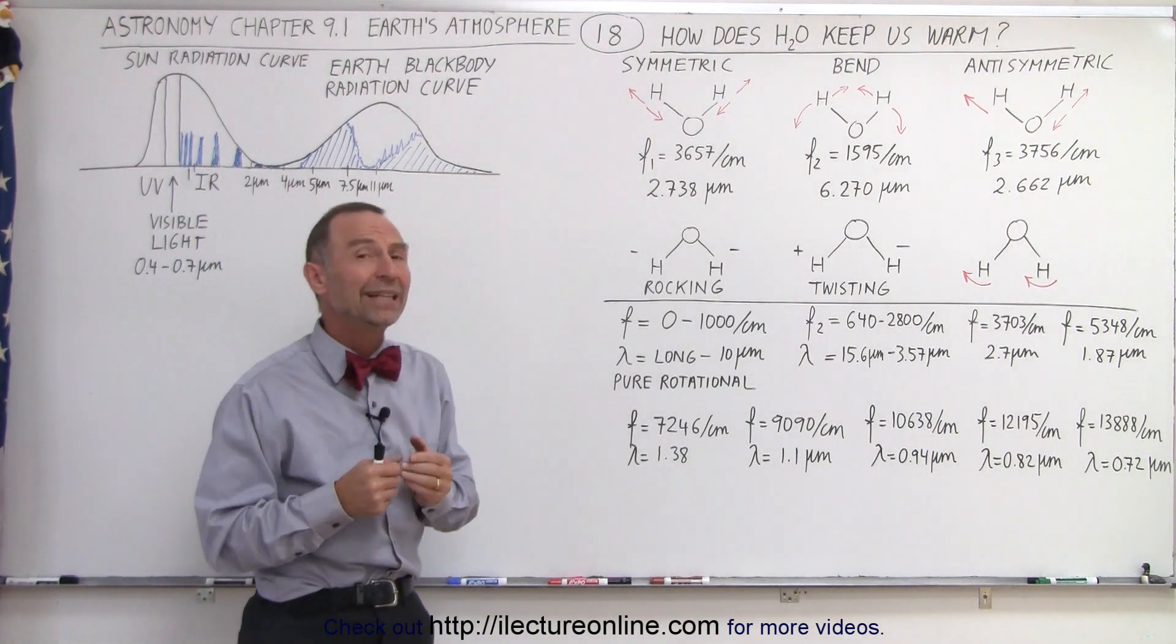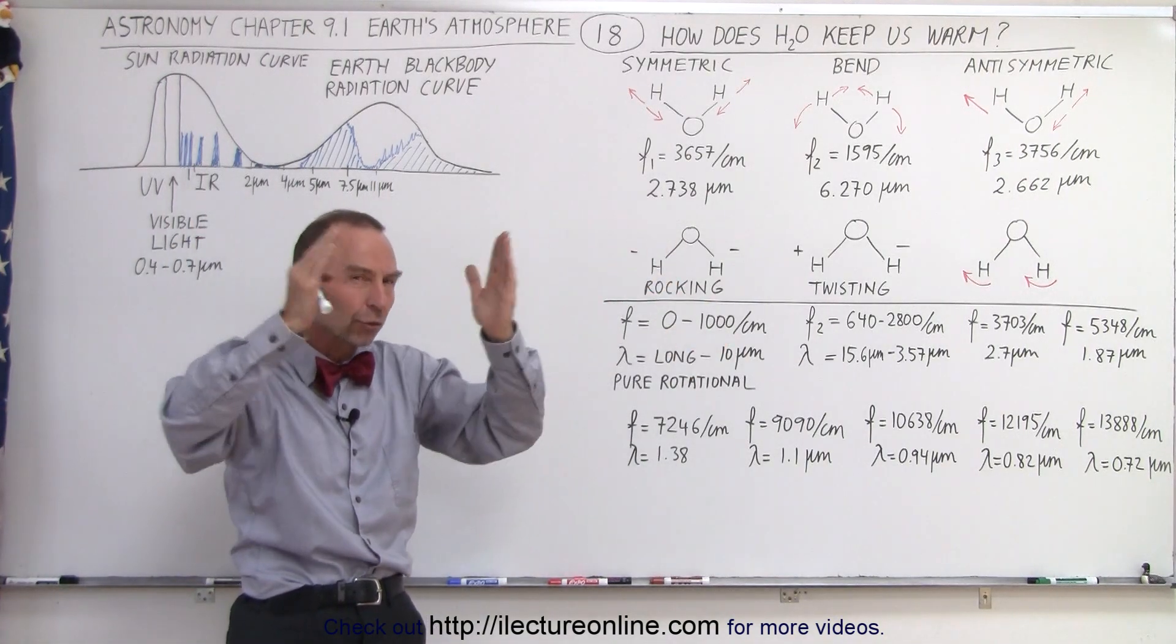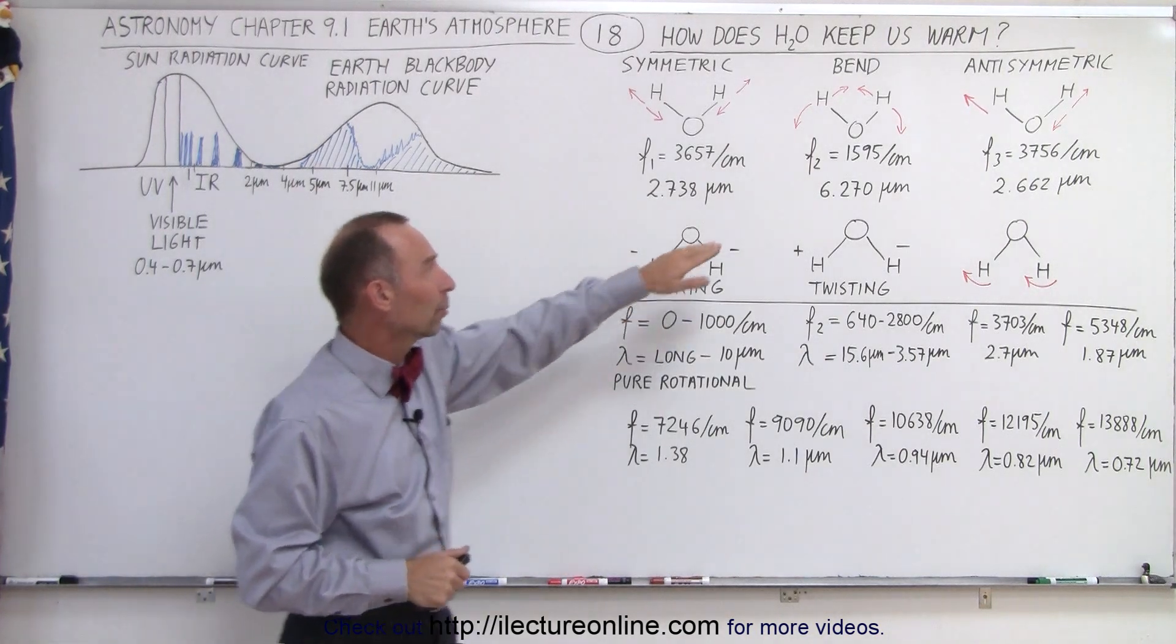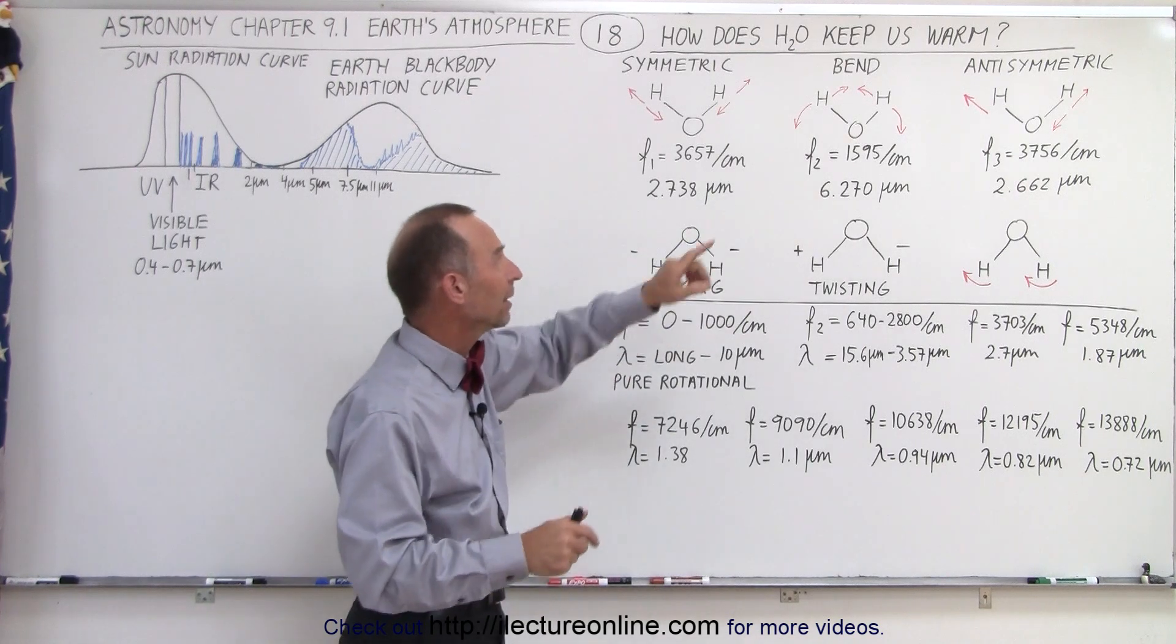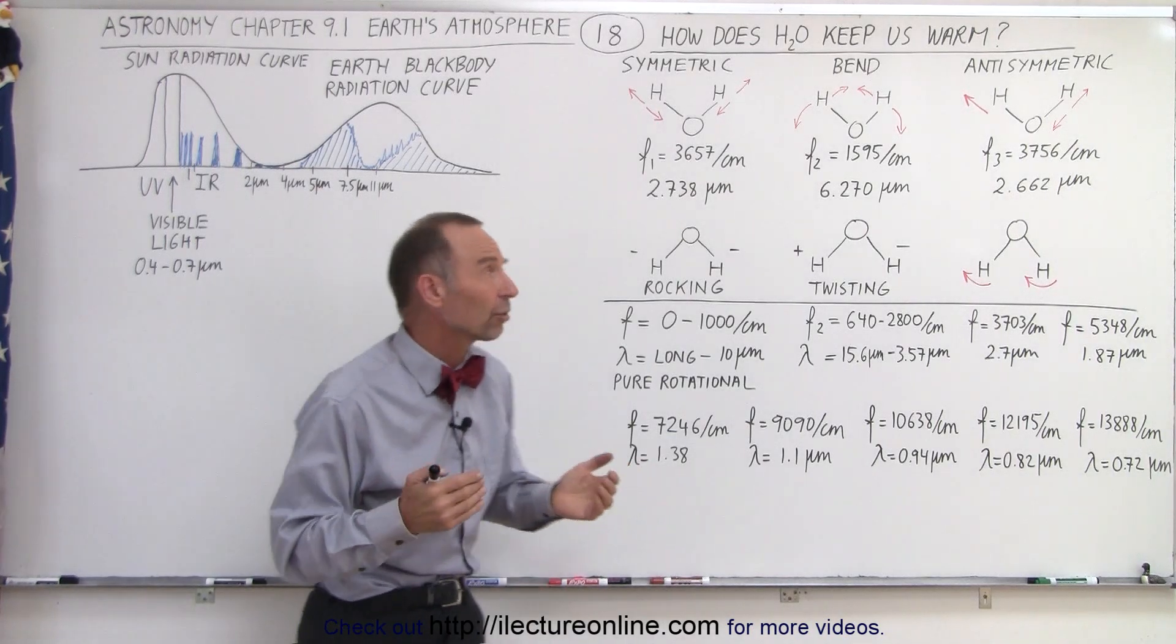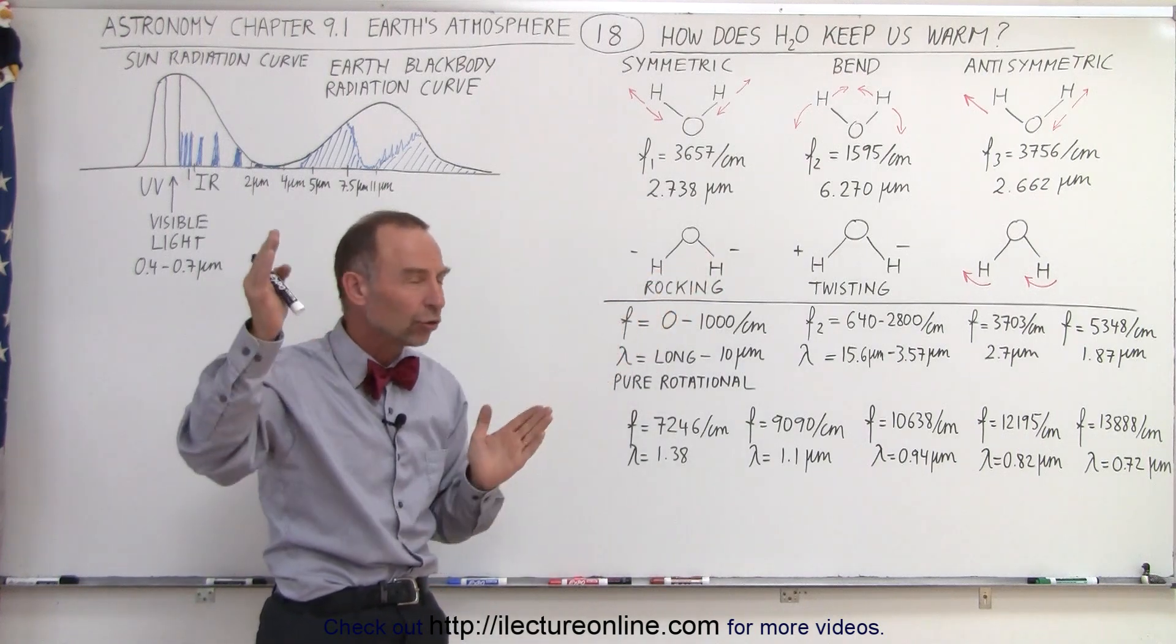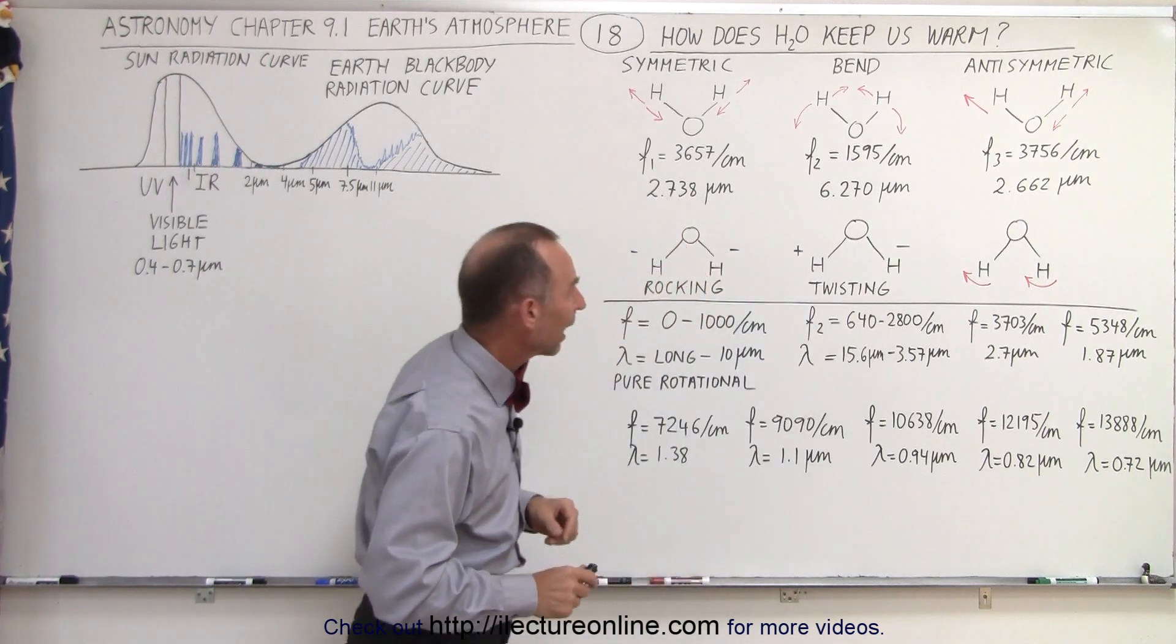Then we have what we call the bending vibration, where the hydrogen molecules can move closer and farther from one another. And therefore we have another very strong absorption band in the 6.27 micrometer radiation band with a frequency of 1595 waves per centimeter. And then we have the anti-symmetric motion, where we can have the hydrogen molecules move away and closer to the oxygen, not in unison to one another. And so we have another vibrational mode due to that.